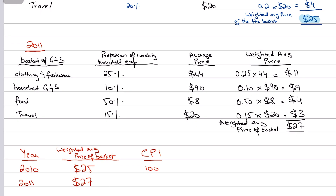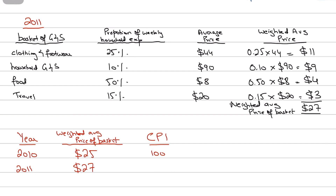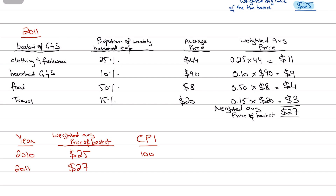I've formulated another basket for 2011 — the following year. The same goods and services are included, but prices have changed slightly. As I mentioned in my previous video, every year the basket is adjusted in terms of what's included, and the weights are reviewed because households' proportion of expenditure on certain goods keeps changing.